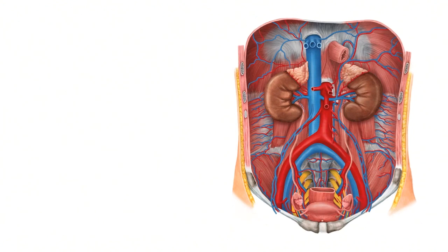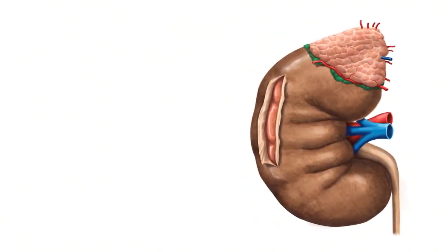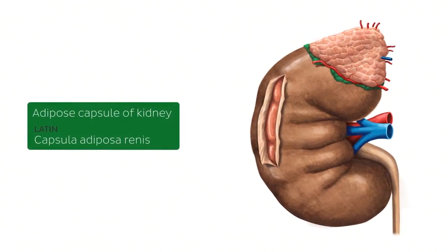Starting off with this one here highlighted in green, this is known as the adipose capsule of the kidney. The adipose capsule is seen mostly from the posterior aspect of the kidneys. It acts as a cushion for the kidneys and surrounds the perirenal fat as well as the renal fascia or capsule.